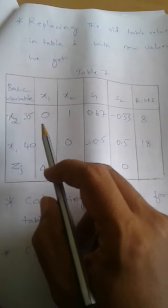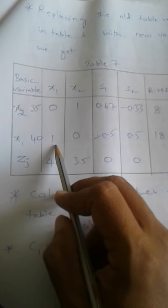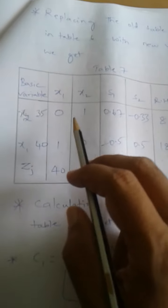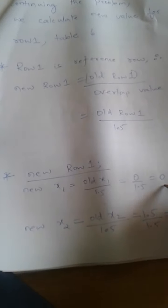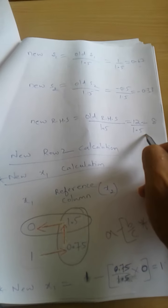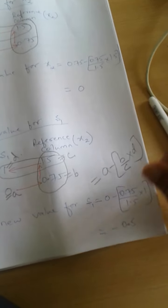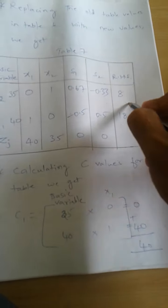All the new values are: for Rho 1 — 0, 1, 0.67, minus 0.33, and 8; and for Rho 2 — 1, 0, minus 0.5, 0.5, and 18. Going back to verify: the new value for Rho 1 is 0, 1, 0.67, minus 0.33, and minus 8; and for Rho 2 it is 1, 0, minus 0.5, 0.5, and 18. The same values are written here for reference.